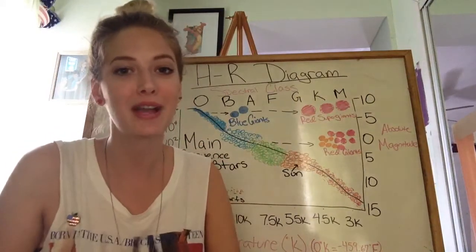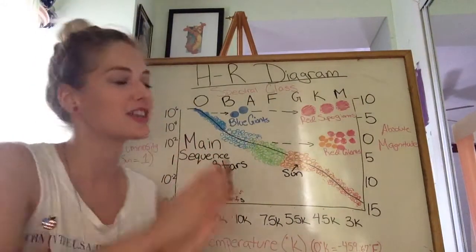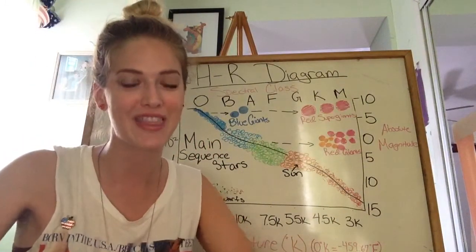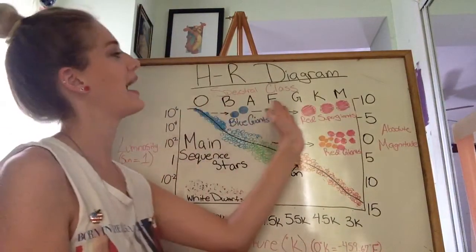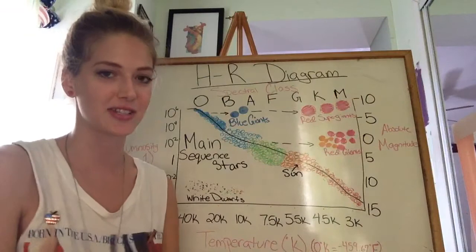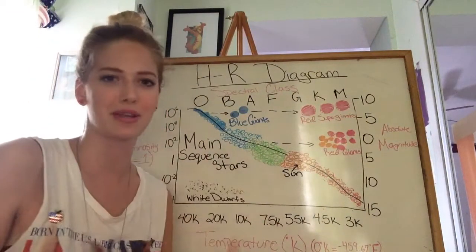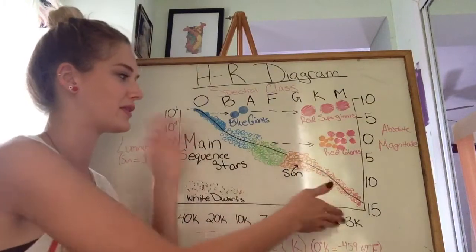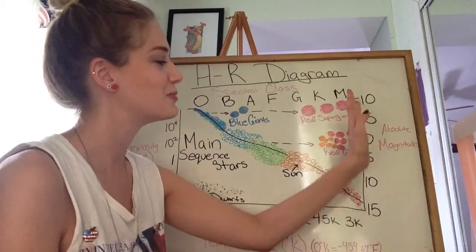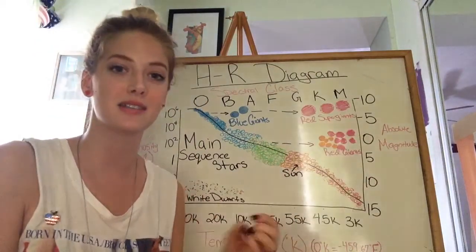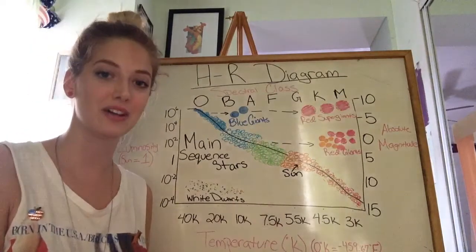So to help you guys out with that, I drew out an HR diagram. HR stands for Hertzsprung-Russell, which were two gentlemen that derived this diagram. Up here I have the spectral class OBAFGKM. That's just an easy way for us to classify the stars. On the right side I have absolute magnitude, this is the approximate size of the star.